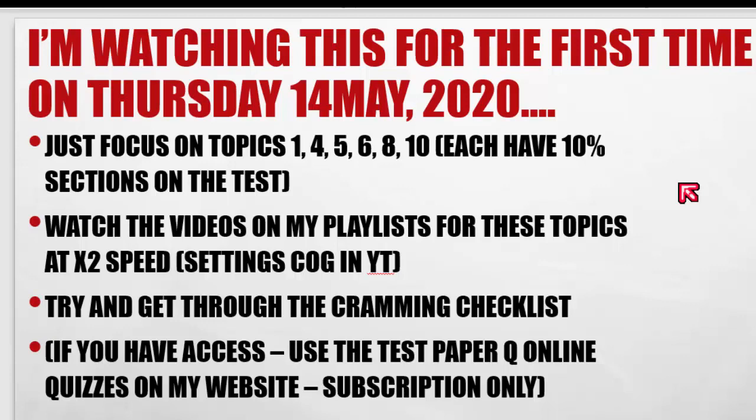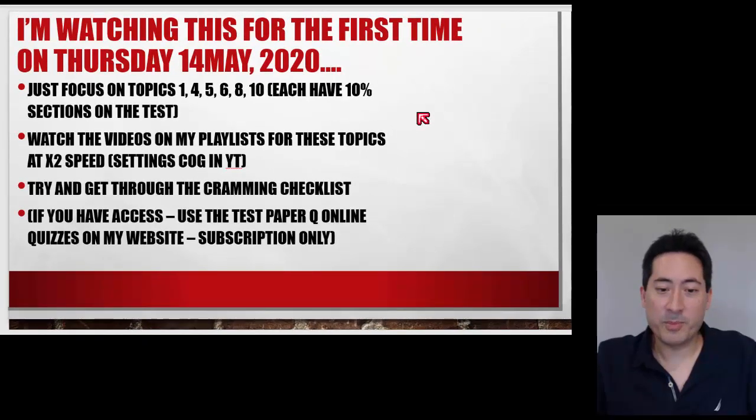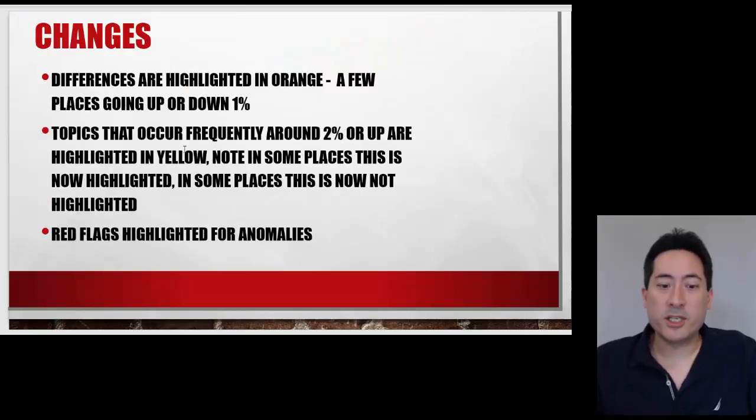Just to jump for those who don't have time, I'll just jump straight to those people who are watching this video tonight. Based on that, I've actually eliminated topic 7. I'll go into this in a little bit more detail. But you'll see that there's about 10% of each of those sections: 1, 4, 5, 6, 8, and 10. I would focus on that. I would go through the playlists, click on the cog under YouTube and go at 2 times speed. And then if you get time, go through that cramming checklist on the previous slide I showed you. For paper 1 I would use the online quizzes because they get automatically marked and you can quickly redo them all over again so that saves time.